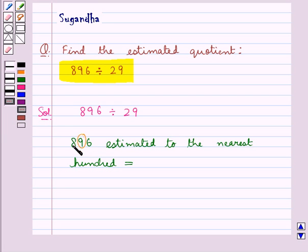That is, we add 1 to this 8, so that would become 9 and we would replace the tens digit and the ones digit by 0. So 896 estimated to the nearest 100 is equal to 900.